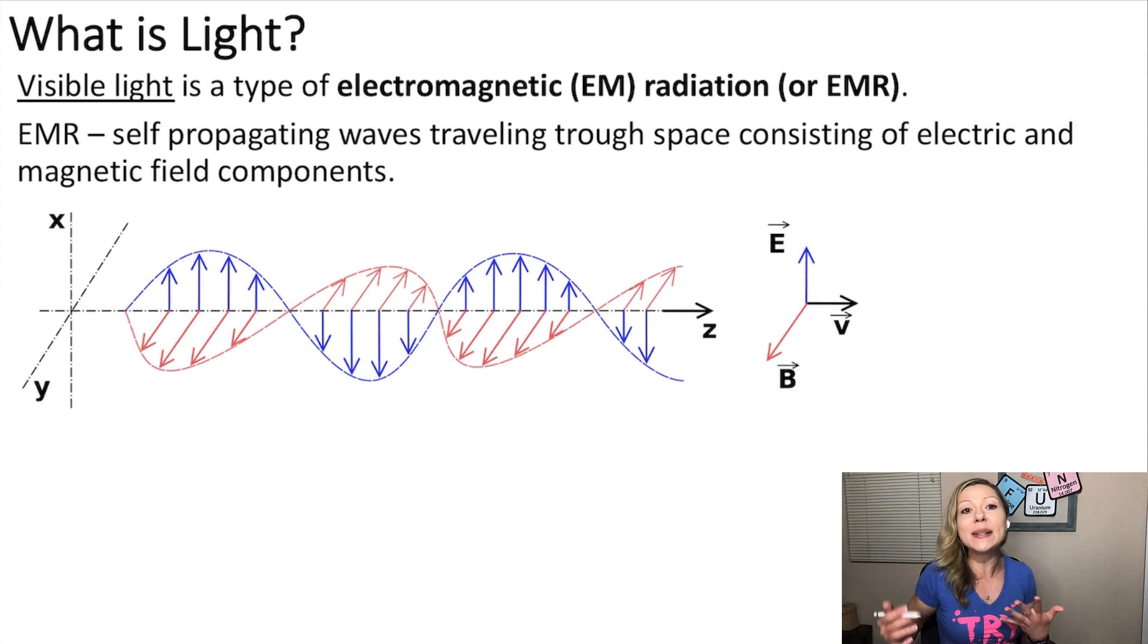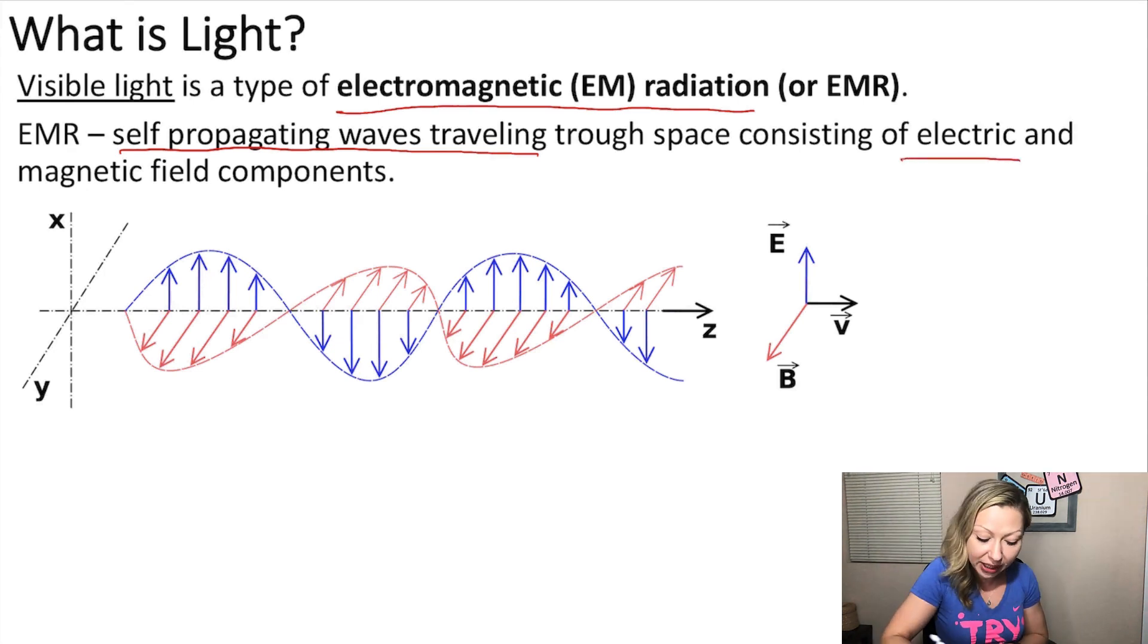Visible light is simply a type of electromagnetic radiation. This type of radiation consists of self-propagating waves which are traveling through space and consisting of an electric and a magnetic field component.